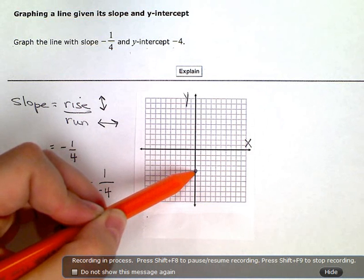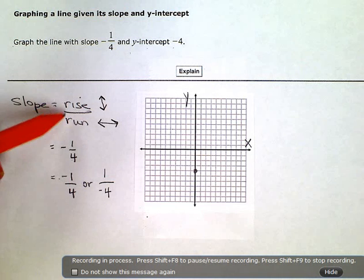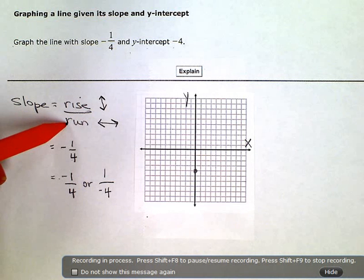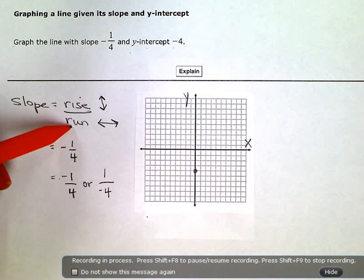Now from that point, starting right here, my slope is going to tell me where to go. Slope is always rise over run, or the number in the numerator is the up-down number, and the number in the denominator is the left-right number.